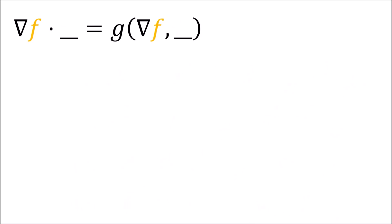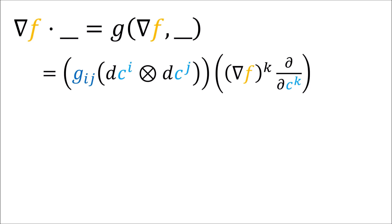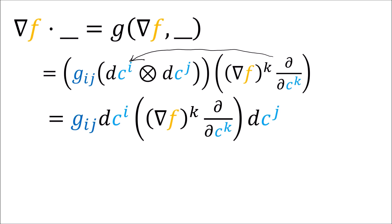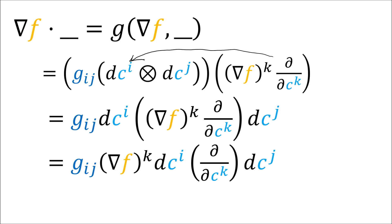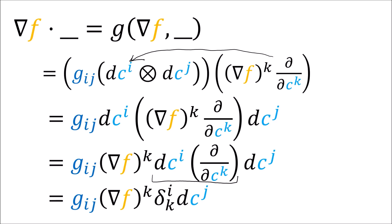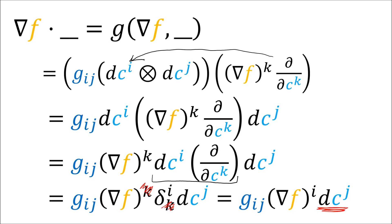To get the components of del f dot something, we remove the vector input and go through the exact same steps: expand in linear combinations, give the vector to the covector, pull the scalars out in front, turn this into a Kronecker delta, and cancel the indexes. So del f dot something is really just a linear combination of basis covector fields dcj with these as the components.